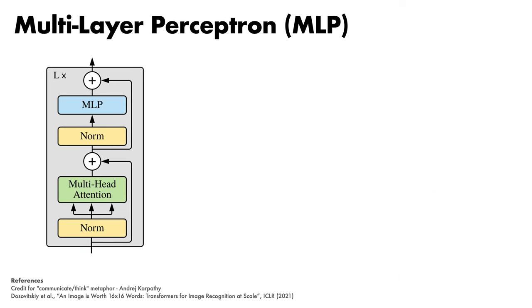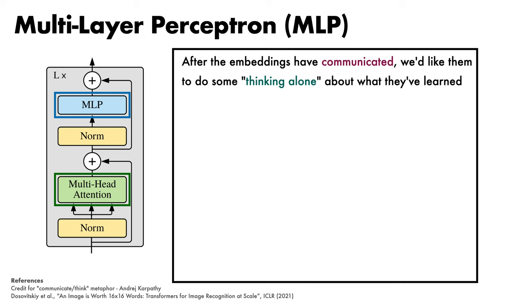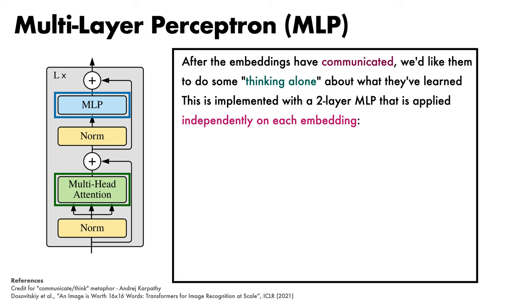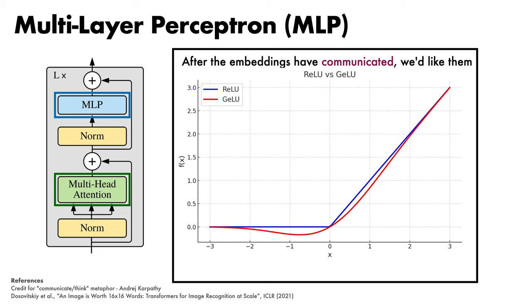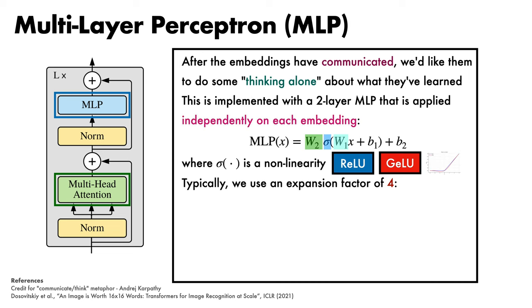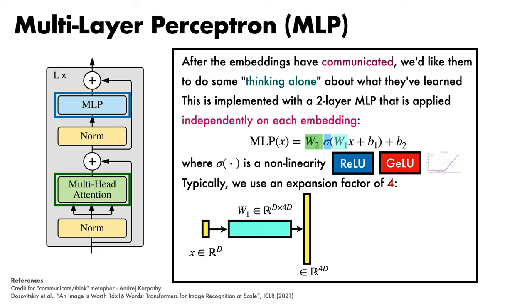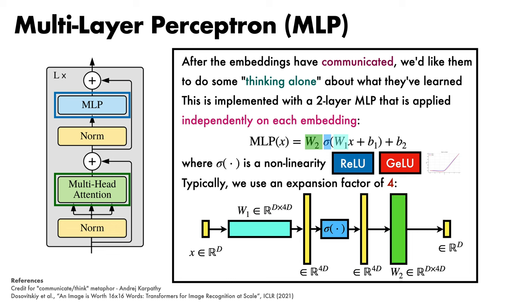Jumping back to our transformer encoder block, we've seen how multi-head attention is implemented. We'll next look at the MLP, the second computationally heavy block. Now that our embeddings have shared their thoughts, we'd like them to do some independent thinking about what they've learned. We achieve this with a two-layer MLP applied independently on each embedding: a linear layer, then a non-linearity sigma, then a second linear layer. The original transformer used ReLU; more recently, GELU has become more popular, being a little smoother near the origin. It's typical to use an expansion factor of 4 — starting from a d-dimensional embedding, we multiply by W1 to increase dimensionality by a factor of 4, apply GELU, then multiply by a second matrix to bring dimensionality back down to d.